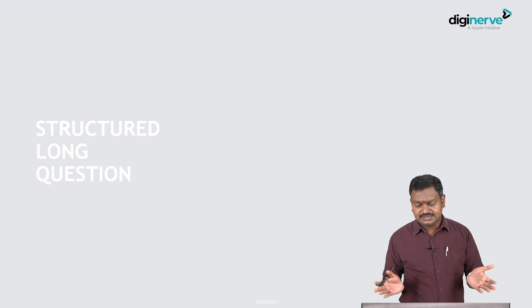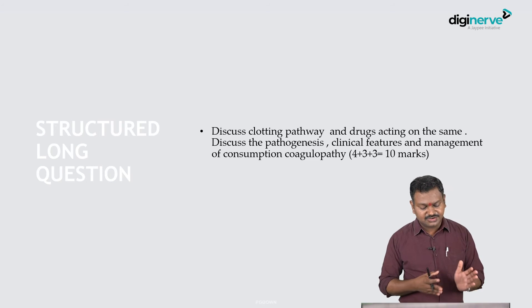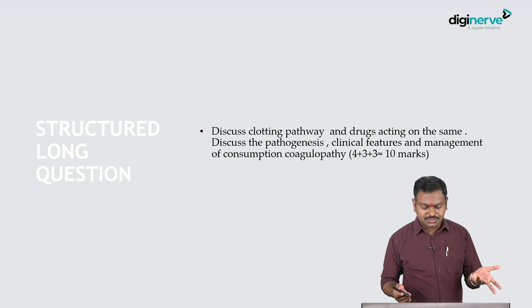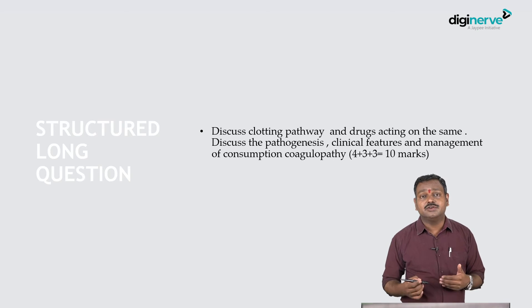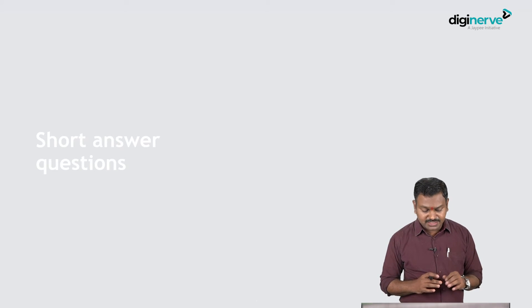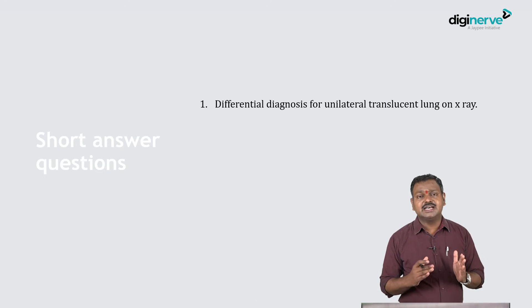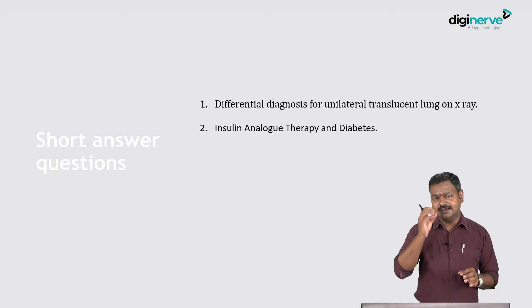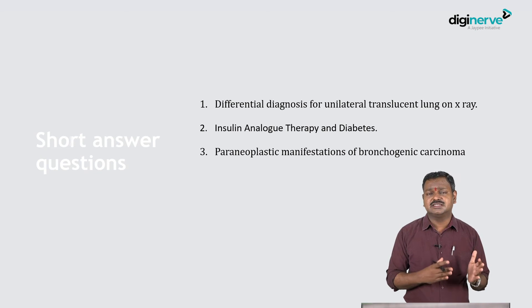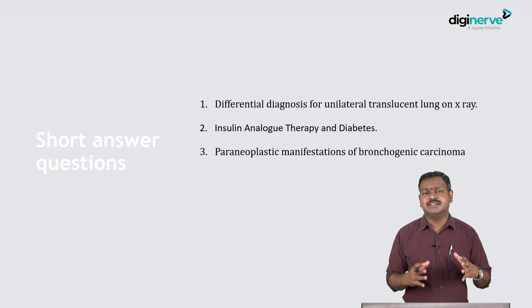Whenever a question has structured subdivisions, answer each subdivision separately. Another type is the structured long question - for example: 'Discuss the clotting pathways, drugs acting on the same, pathogenesis, clinical features and management of consumptive coagulopathy.' Mark splits are given so you must follow them. Short answer questions are 3 or 4 markers - write specifically. For a 3-marker, 6-7 good points is sufficient; for a 4-marker, 8-10 points is sufficient.